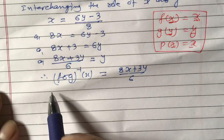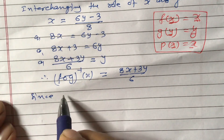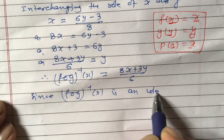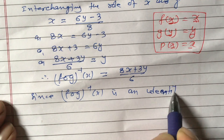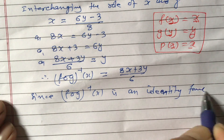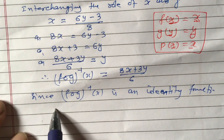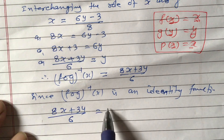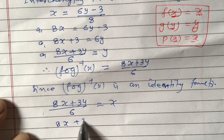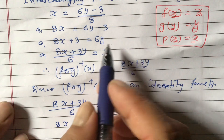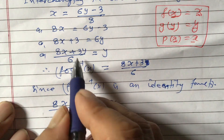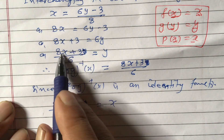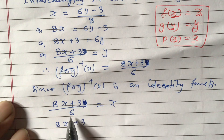Since f of g inverse x is an identity function, we set (8x + 3) / 6 equal to x. Cross multiplying gives 8x + 3 equals 6x.